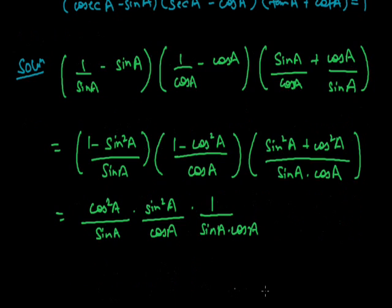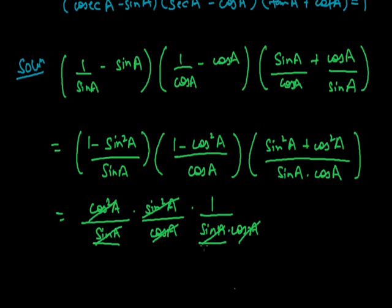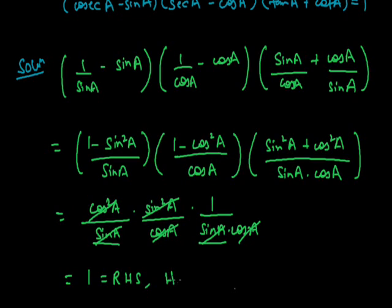So all terms cancel and we get equal to 1, which is our RHS. Hence proved. In this way we need to solve questions based on trigonometric identities and trigonometric ratios of complementary angles.